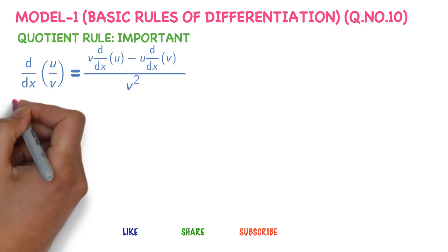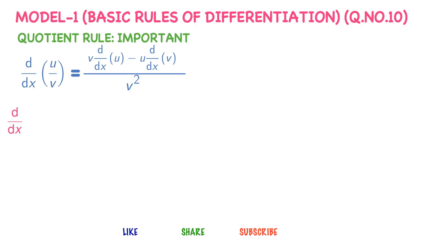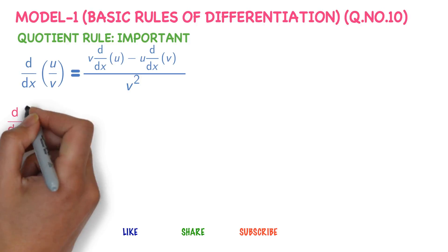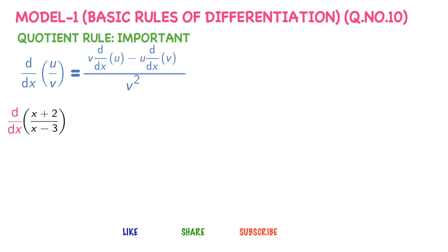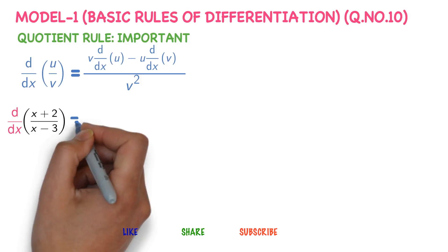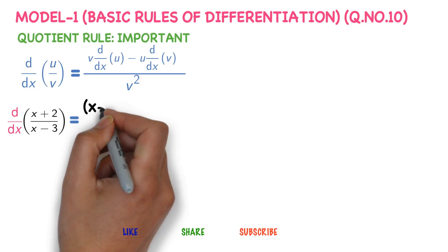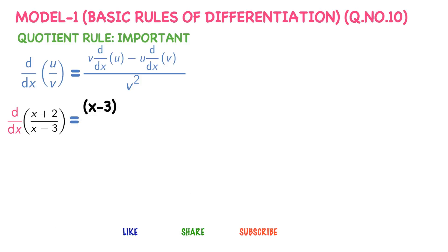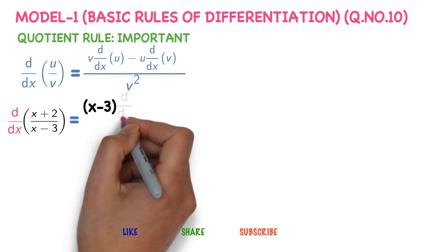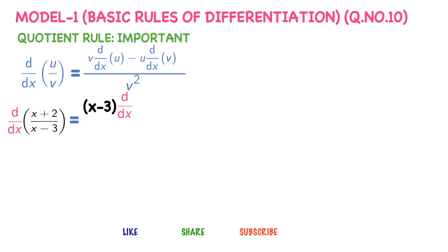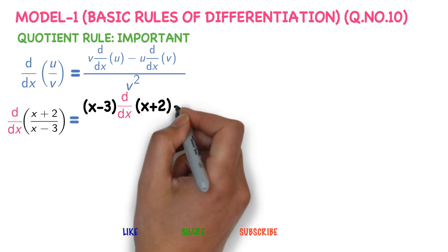Find d by dx of (x plus 2) divided by (x minus 3). Observe that (x plus 2) divided by (x minus 3) is of the form u by v. Now apply the formula: v, which is (x minus 3), into the derivative of u, where u is (x plus 2).